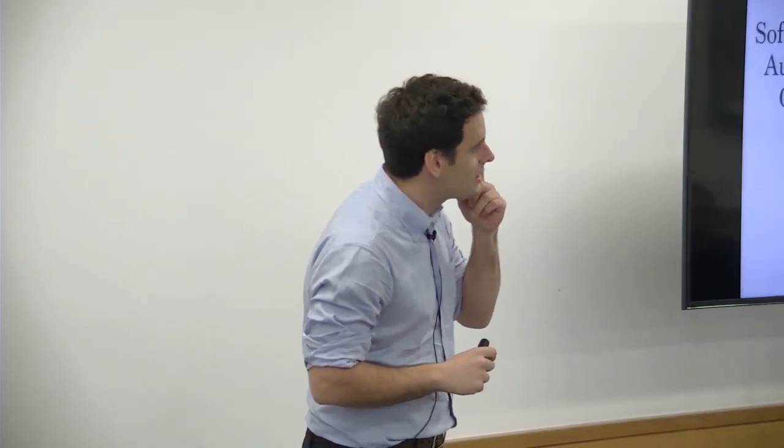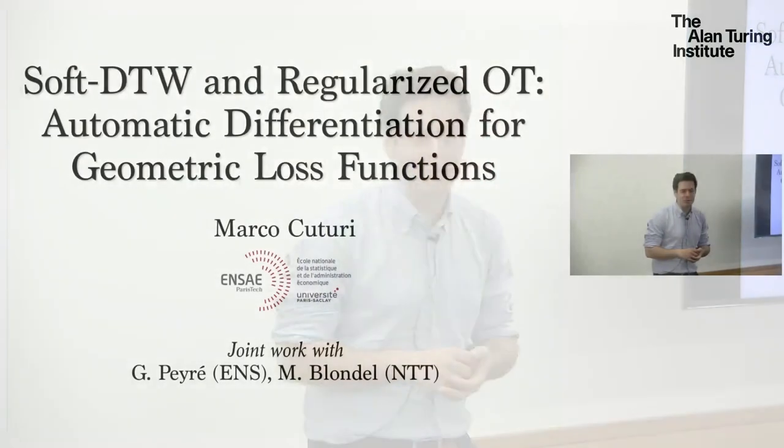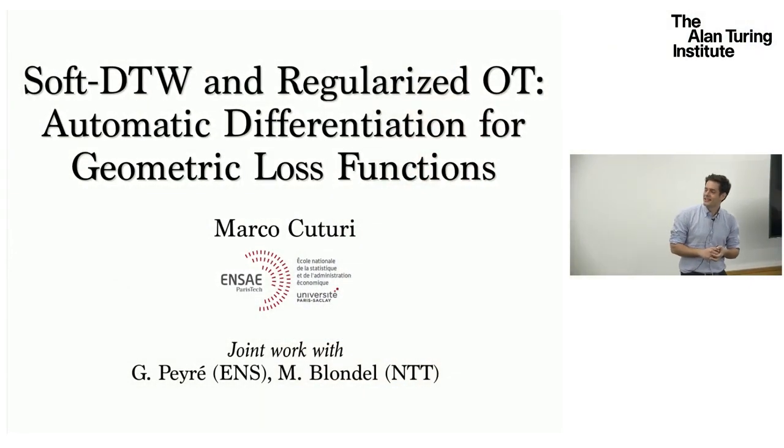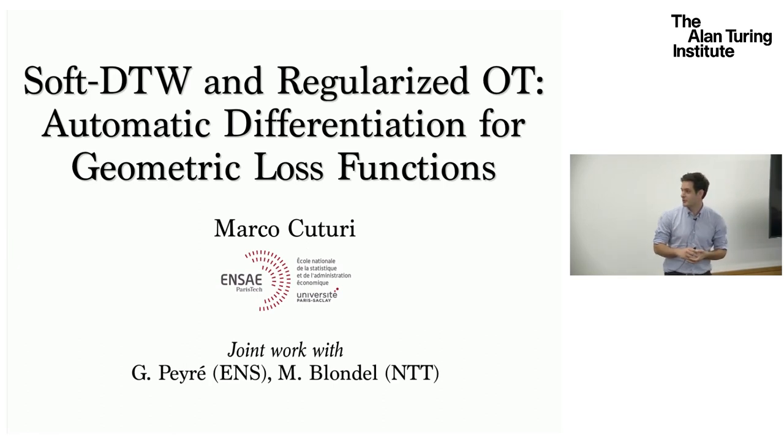This is joint work with Gabriel Perret and Mathieu Bourdel, mostly, but I have a lot of other collaborators on this line of work. The title is a bit long. It's called Soft DTW — DTW is dynamic time warping — and Regularized OT, where OT is optimal transport. It's followed by automatic differentiation for geometric loss functions.